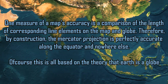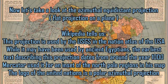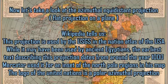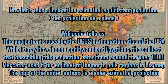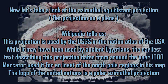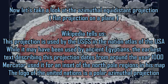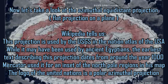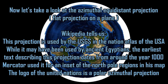Of course, this is all based on the theory that Earth is a globe. Now let's take a look at the azimuthal equidistant projection. This projection is used by the USGS in the National Atlas of the USA. While it may have been used by ancient Egyptians, the earliest text describing this projection dates from around the year 1000.